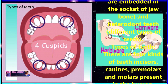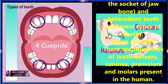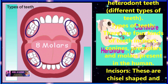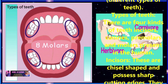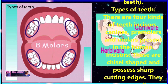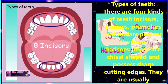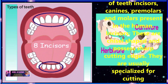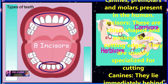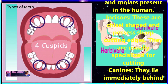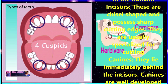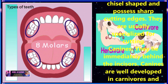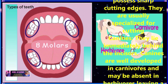Now let us discuss the types of teeth in humans. There are four kinds of teeth: incisors, canines, premolars, and molars. Let us discuss about incisors. Incisors are chisel-shaped and possess sharp cutting edges. They are usually specialized for cutting the food.